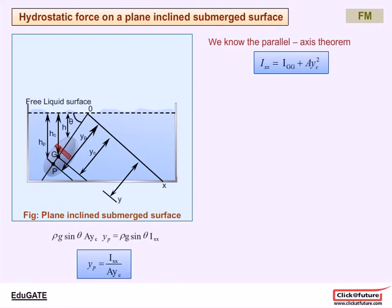Converting to depth form: Hp / sinθ = Hc / sinθ + Igg / (A · Hc / sinθ), where Hp = Yp sinθ and Hc = Yc sinθ. Therefore, Hp = Hc + Igg sinθ² / (A·Hc). Thus, from the above equation, we can say that the location of the center of pressure for an inclined plane submerged surface depends on the inclination angle.